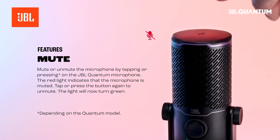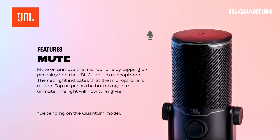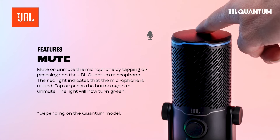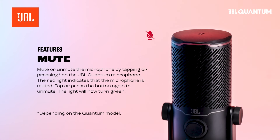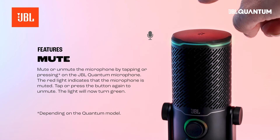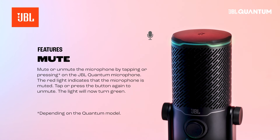Mute or unmute the microphone by tapping or pressing the button on the JBL Quantum Microphone. The red light indicates that the microphone is muted. Tap or press the button again to unmute — the light will now turn green.